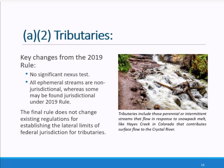The final rule does not require a significant nexus analysis to determine jurisdiction, which is different from how the agencies are implementing the 2019 rule. This analysis, as called for under Justice Kennedy's opinion in the Rapanos Supreme Court case, requires the agencies to prove that the water or wetland in question has significant physical, chemical, and biological effects on other covered waters more readily understood as navigable. Ephemeral streams are not jurisdictional under the final rule, a contrast to the 2019 rule and pre-2015 rule practice where some ephemeral streams have been found jurisdictional following a significant nexus analysis.